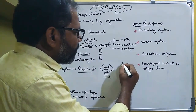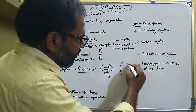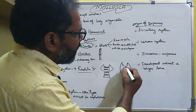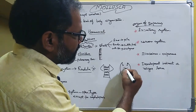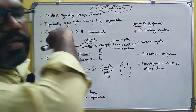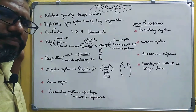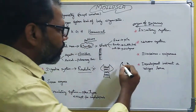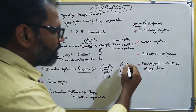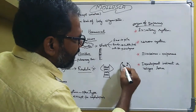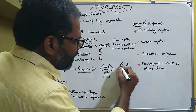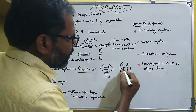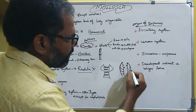The nervous system is a ganglionic system. There are paired ganglia: cerebral ganglia and pedal ganglia. The ganglia are connected by lateral nerves forming a double ventral nerve arrangement.